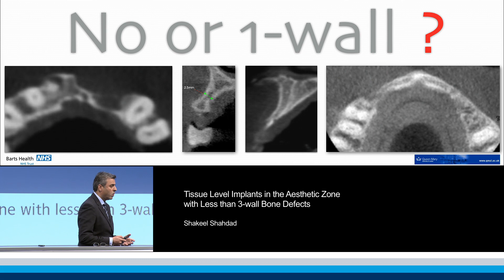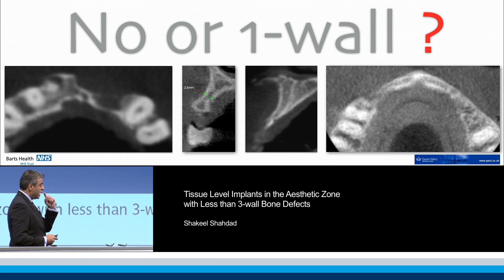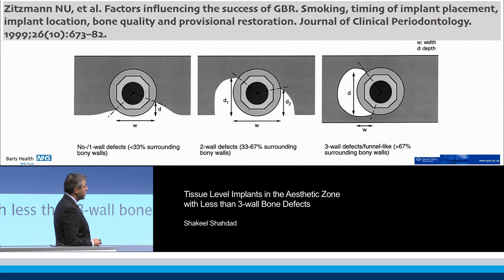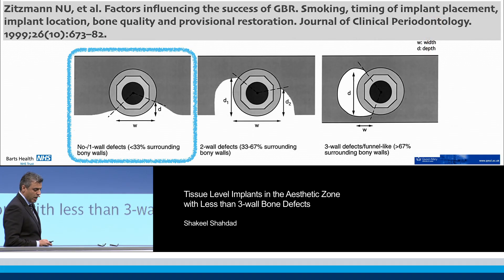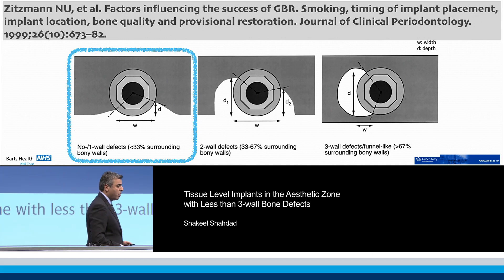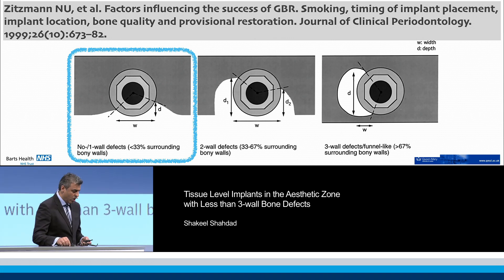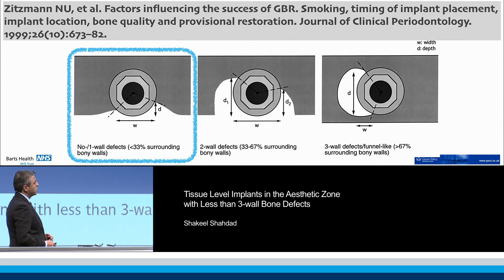Specifically, whether implants can be placed simultaneously in one-wall or no-wall defects, particularly in the aesthetic zone. To address this: a no-wall or one-wall bone defect has been previously described as when an implant has less than 33 percent of surrounding bony walls. I am not touching on two-wall or three-wall defects here.